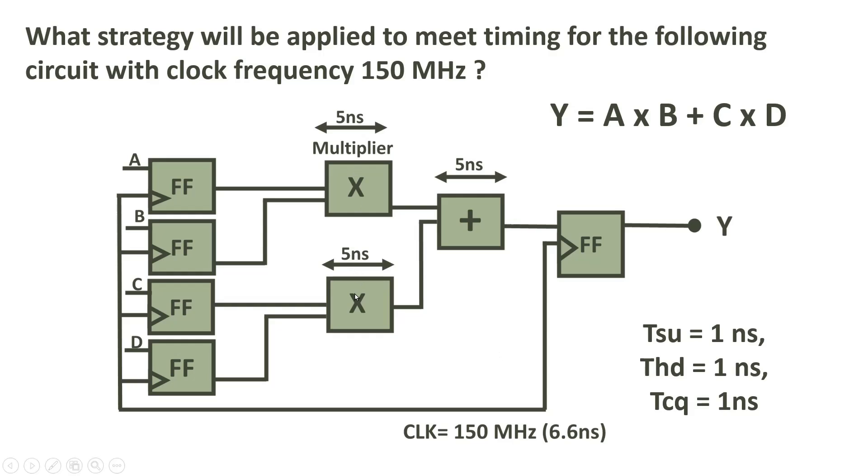These two are the multipliers. This is the summation. Now the first question from all of you is, without applying any strategy, without altering this design, can you tell me, what can be the maximum operating frequency of this design? Can this design work at 150 MHz without making any change? You can pause my video here. Try to make your calculations. Whatever your calculation is, please write it down in the comment section so that we can discuss it there. Otherwise, I am going to reveal its answers.